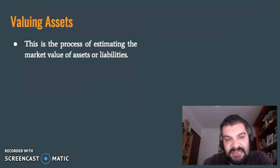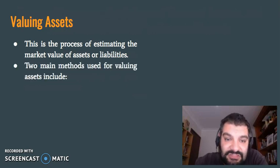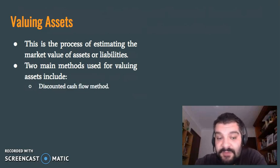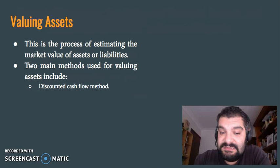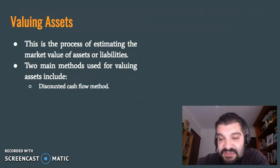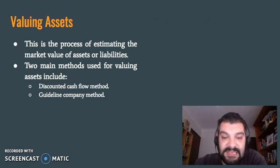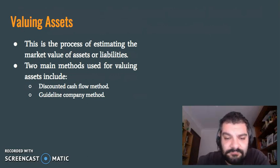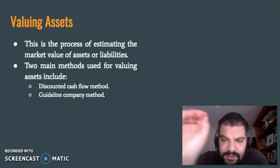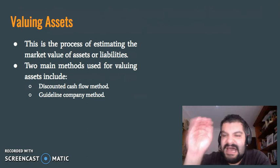Valuing assets is another limitation — the process of estimating the market value of assets or liabilities. There are two main methods here. The discounted cash flow method estimates the value of an asset based on its expected future cash flows, which are then discounted to the present value. The guideline company method determines the value of a firm by observing the prices of similar companies — called guideline companies — that are sold in the market, basically using what everyone else is doing as a starting point.